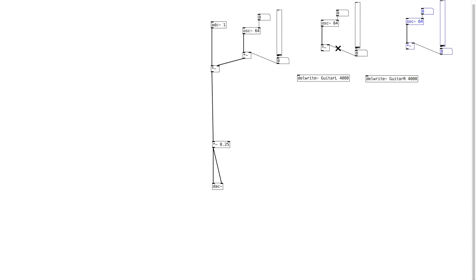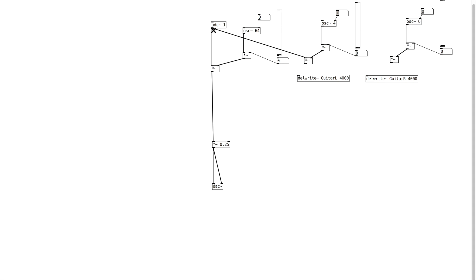And then we're going to create another signal multiplier here, duplicate that. Let's make this one a low frequency — let's make it 4. This way, instead of having sidebands, we will get the tremolo effect. And then let's attach our ADC there, and our ADC there, and then we'll run this into the delay.